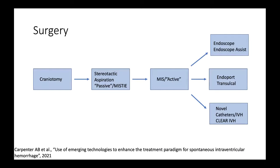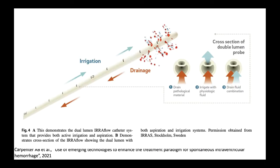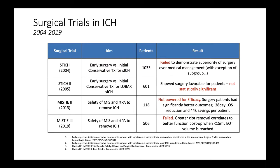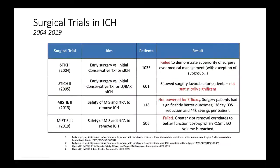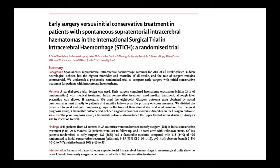The CLEAR IVH trial shows that treating IVH improves outcomes. New MIS devices for IVH include the Eroflow, a dual-lumen catheter allowing simultaneous drainage and irrigation of bloody spinal fluid. Clinical trials summary: STITCH used predominantly craniotomy (over 70% of cases) with some stereotactic aspiration. MISTI used stereotactic aspiration without direct visualization - what we no longer do. The current guidelines are based exclusively on these two earlier-generation modalities.